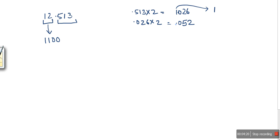So the remaining part 0.026 times 2 equals 0.052. Before the point there is nothing so we will consider 0, we will write 0 here.